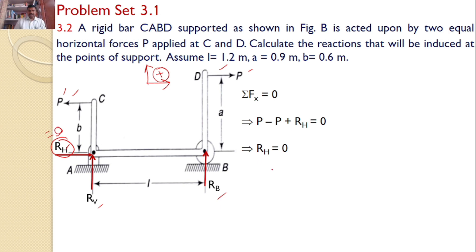Let us consider sigma Fy equals 0. There are only two forces. Both forces are acting in the upward direction, so RB plus RV equals 0. Let us take this one as equation 1.